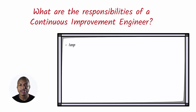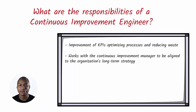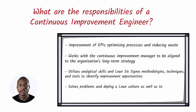The Continuous Improvement Engineer is responsible for supporting the improvement of key performance indicators, optimizing and reducing waste in manufacturing processes. The Continuous Improvement Engineer works with the Continuous Improvement Manager to be aligned to the organization's long-term strategy. The CI Engineer utilizes analytical skills and Lean Six Sigma methodologies, techniques, and tools to identify improvement opportunities, solves problems, deploys a Lean culture, and teaches, coaches, and mentors others to utilize the same methodologies to improve their processes and solve problems.